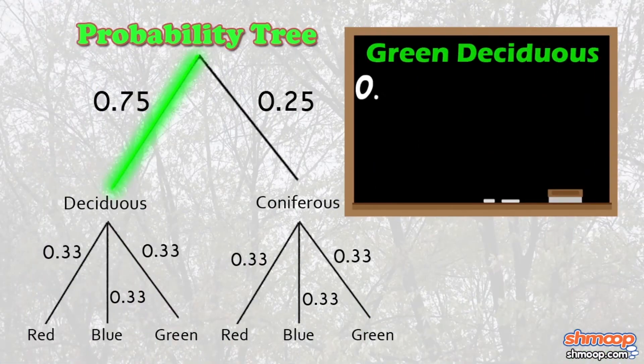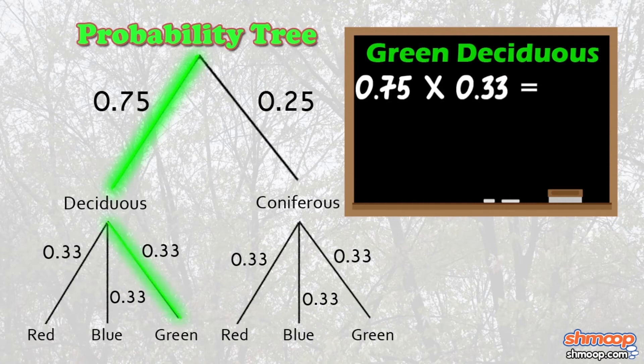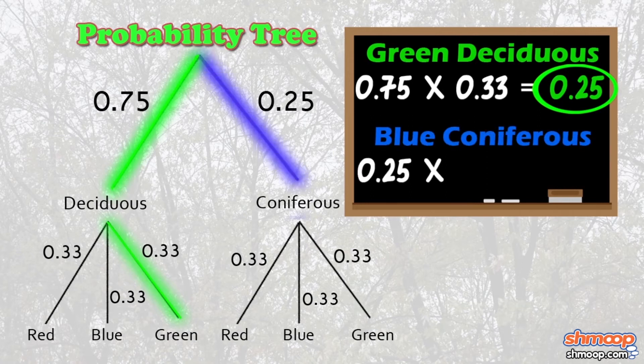Green deciduous? Well, just 0.75 times 0.33, and it equals 0.25. Blue coniferous? Well, 0.25 times 0.33, and you get 0.083, or 8.3%.